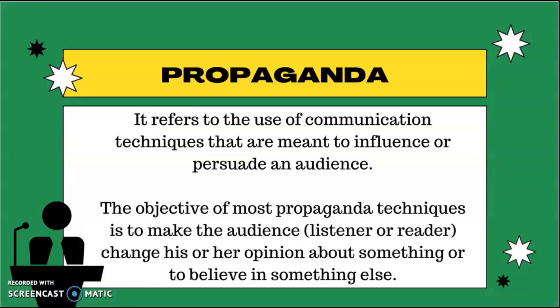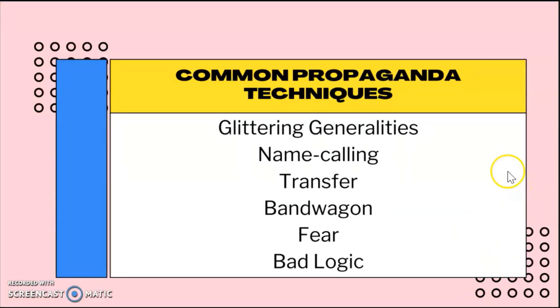Propaganda also refers to the use of communication techniques meant to influence or persuade an audience. When we speak of persuasion, we mean convincing power — we use propaganda in order to convince people, and that is applicable in advertisements. The objective of most propaganda techniques is to make the audience, listener, or reader change their opinion about something or believe in something else. Today, let us explore the different techniques: glittering generalities, name calling, transfer, bandwagon, fear, and bad logic.